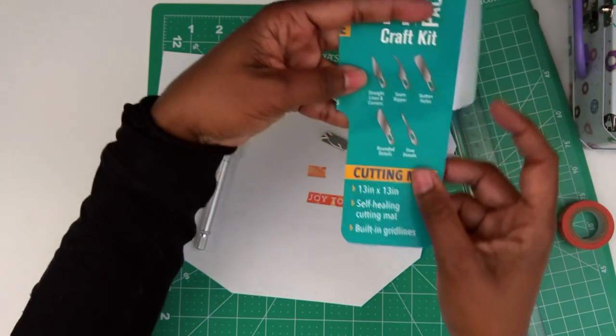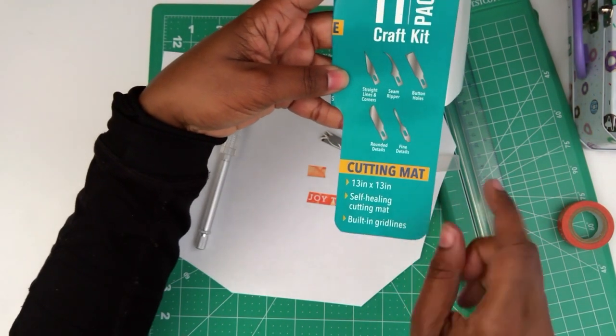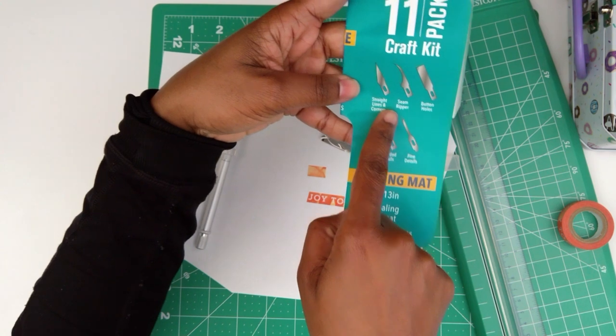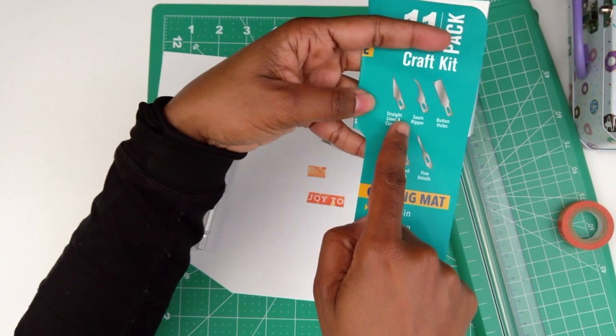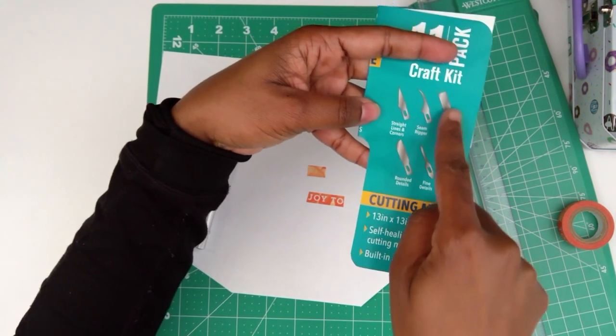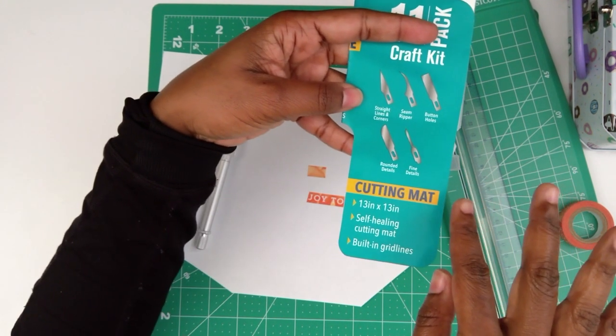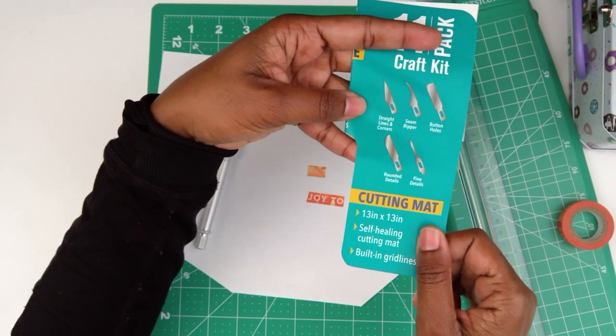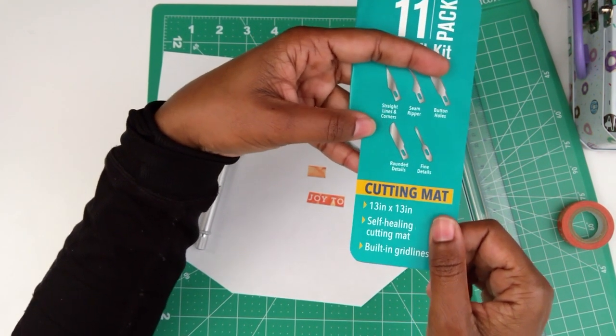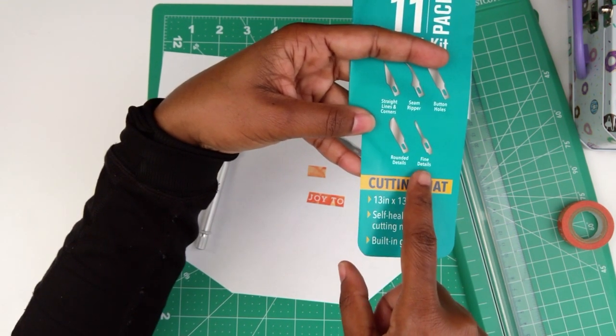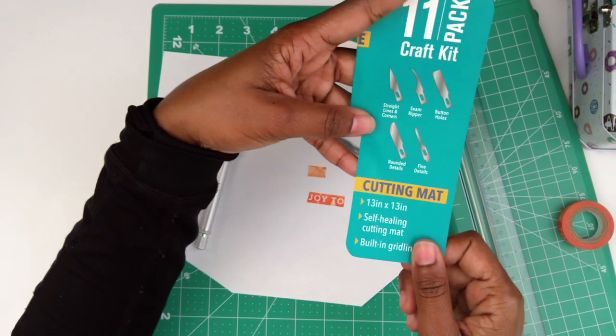So it has these five. One for straight lines and corners. One for seam rippers, if you've done some sewing and you want to rip the seams in some fabric. This one helps with buttonholes. I personally don't sew. Never mastered that craft. But this can be a handy tool for someone that is into sewing. And then this one does rounded corners. And this one is just for little fine details. So, nice.